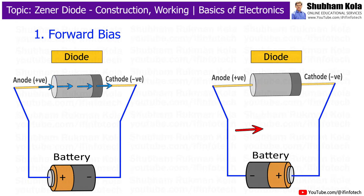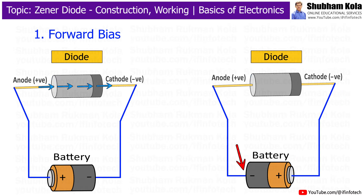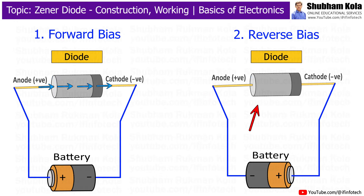However, if we reverse the connection, making the battery's positive terminal connected to the cathode and the negative terminal connected to the anode, the diode becomes reverse biased and ideally no current flows.